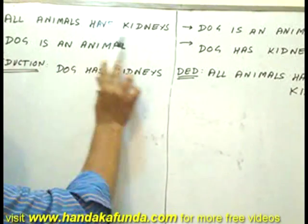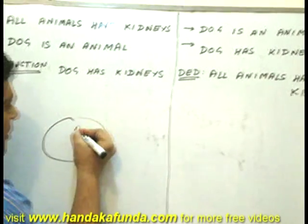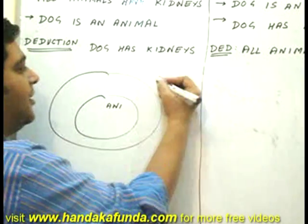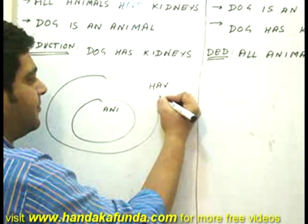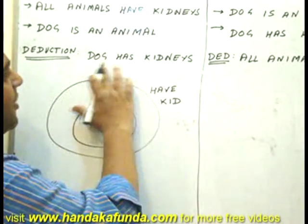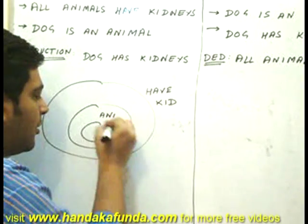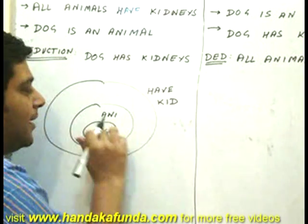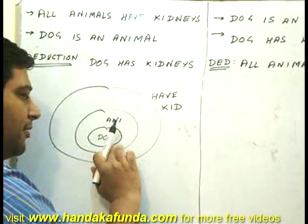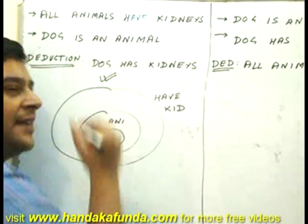Let's draw the Venn diagram for this. All animals have kidneys, so first I have a set for animal, and then having kidneys. The second statement is dog is an animal, so the set of dog is inside the animal set. And so my deduction — dog has kidneys — since dog is inside the have-kidneys set, is a valid statement.